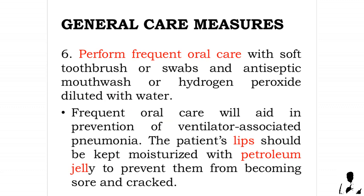Six: perform frequent oral care with a soft toothbrush or swabs and antiseptic mouthwash or hydrogen peroxide diluted with water. Frequent oral care aids in the prevention of ventilator-associated pneumonia. The patient's lips should be kept moisturized with petroleum jelly to prevent them from becoming sore and cracked.